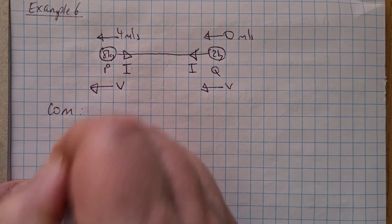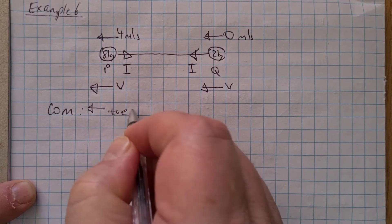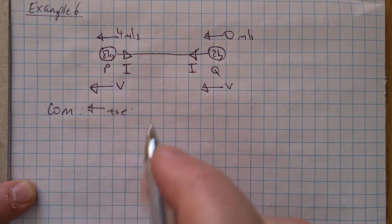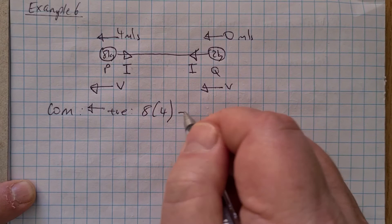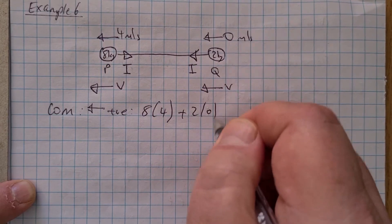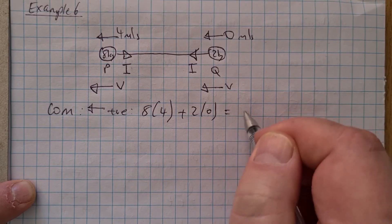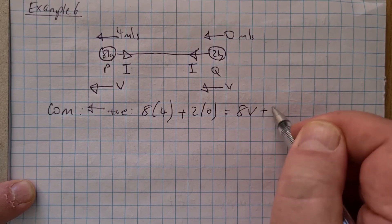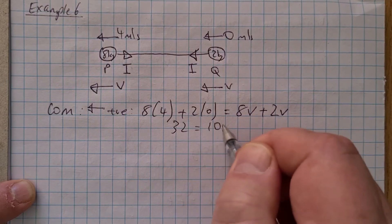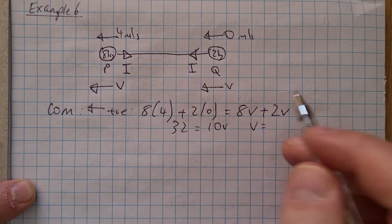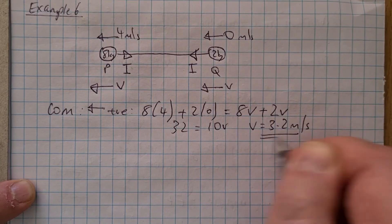Using conservation of momentum, taking to the left as positive. Total momentum before: 8 × 4 plus 2 × 0. That equals 8V + 2V = 10V. So 32 = 10V, giving a common speed after the collision of 3.2 metres per second.